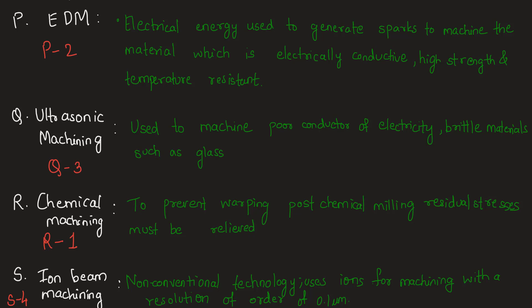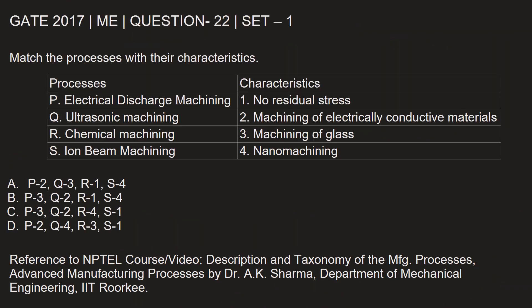S matches with option 4. Let's mark the correct matches: P-2, Q-3, R-1, S-4. The option with these matches is Option A, which is correct. To learn more about manufacturing processes, you can refer to the NPTEL video 'Description and Taxonomy of Manufacturing Processes.'